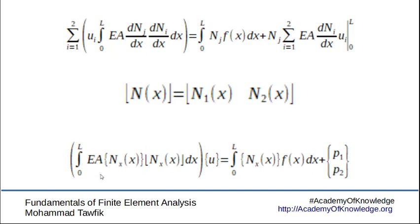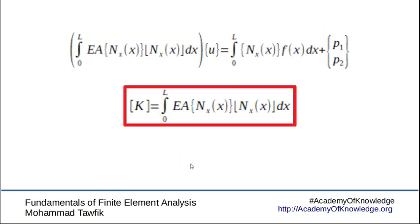This part is the core of our interest. This is where we create the stiffness matrix of the bar element. Thus we can extract this integration and call it the stiffness matrix. Later the equation will be the stiffness matrix multiplied by the displacement vector equal to the right hand side.